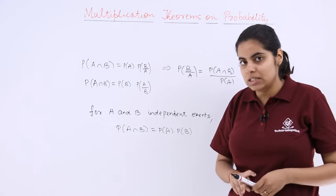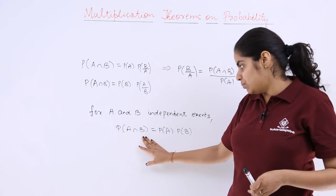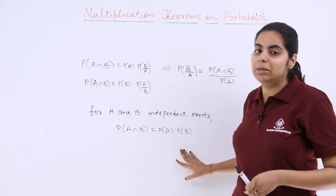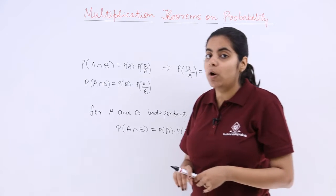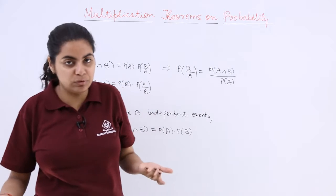So for A and B to be independent events, P of A intersection B is equal to P of A multiplied by P of B. This is very important because they are independent, they will not influence each other.